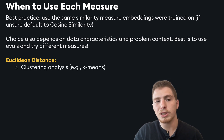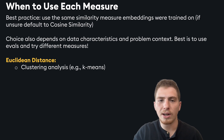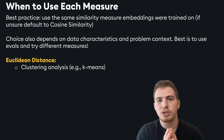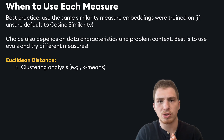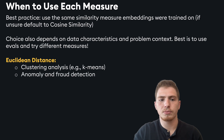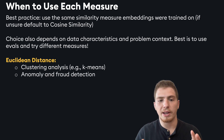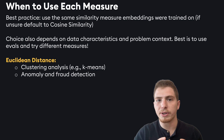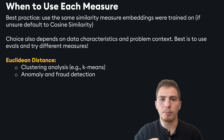Euclidean distance is best for clustering analysis, where we have points in space and want to cluster them — straight line distance makes a lot of sense there. It's also good for anomaly and fraud detection. For example, if we have an area in multidimensional space which we know is within expected results, and we get a point outside of that area, then it's likely an anomaly.